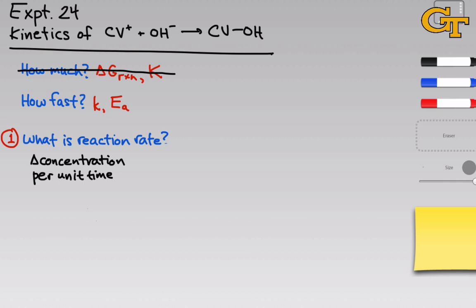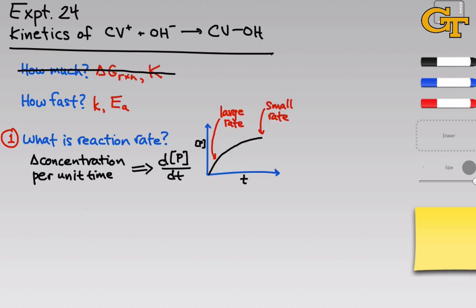If we take that unit time and make it smaller and smaller until it's infinitesimally small, we arrive at what's called an instantaneous reaction rate, and we can capture this as a derivative. The derivative is the change in the concentration of P (for product) with respect to time — dP/dT. A graph of the concentration of P with respect to time might look something like this, and that derivative captures the instantaneous rate of change, or the slope of the tangent line to the curve.